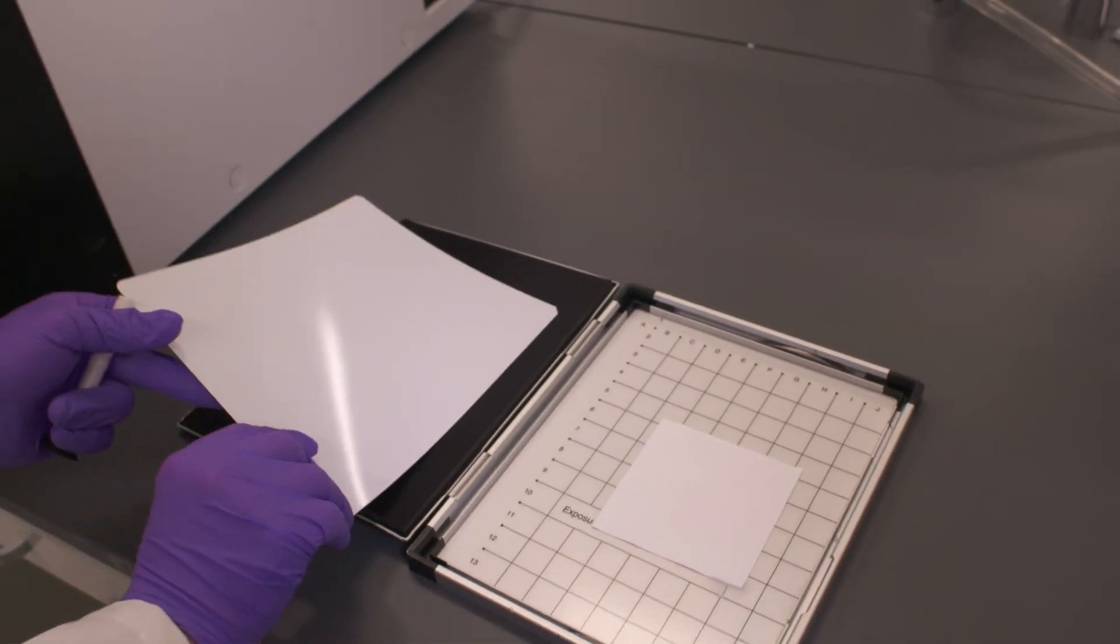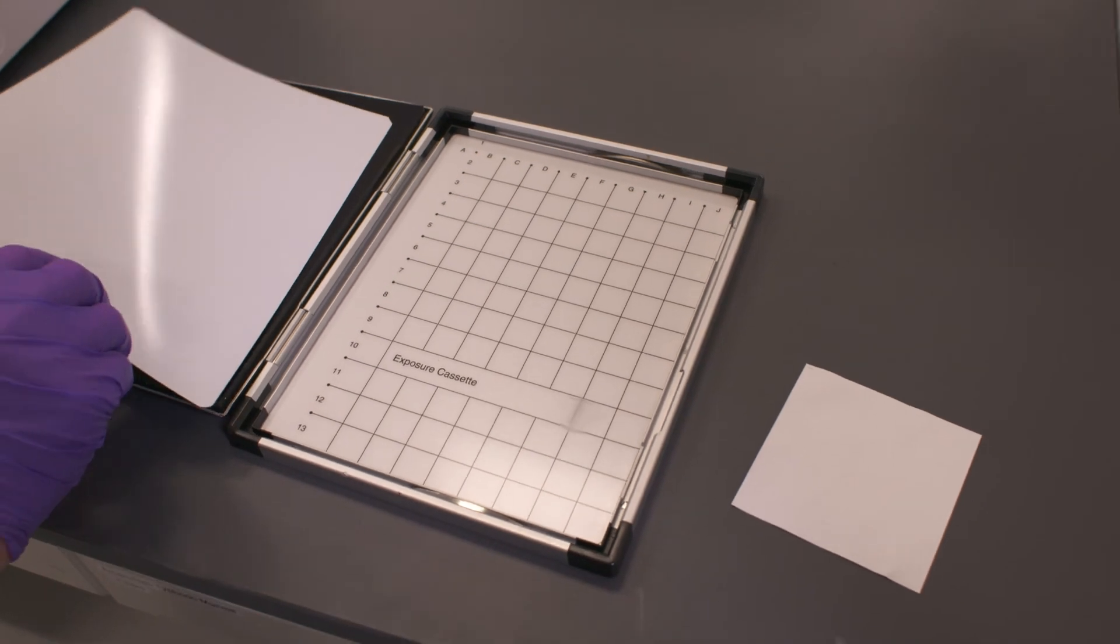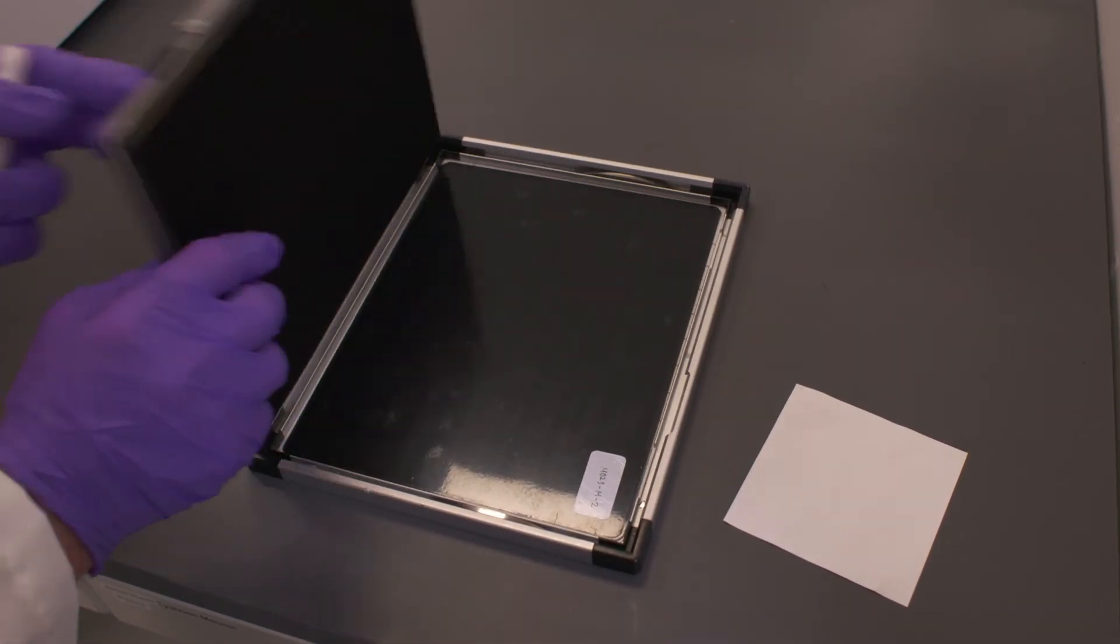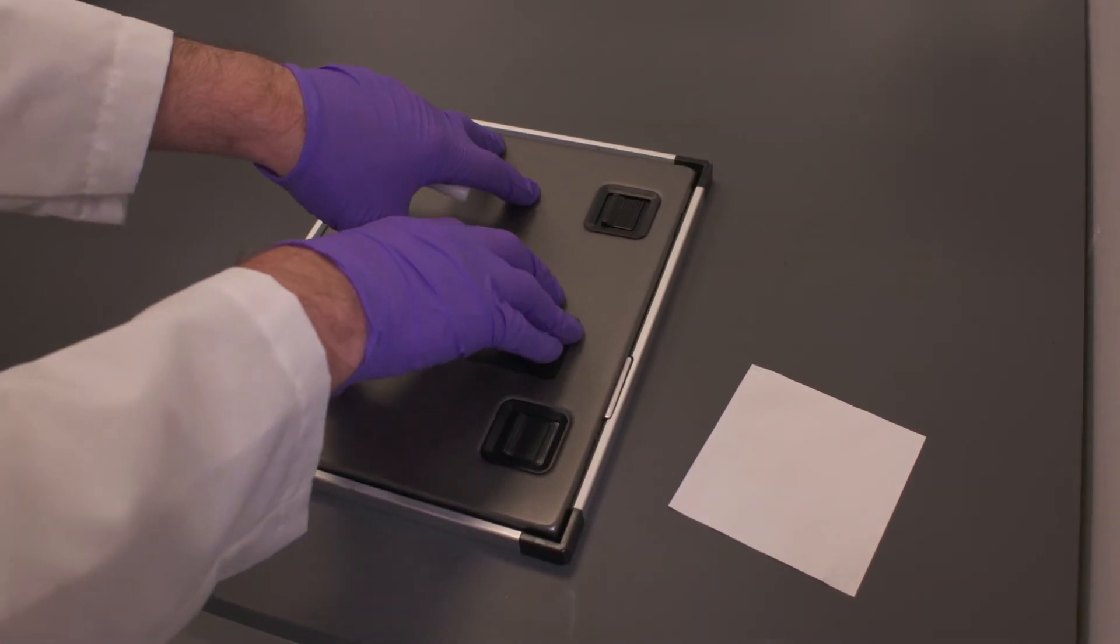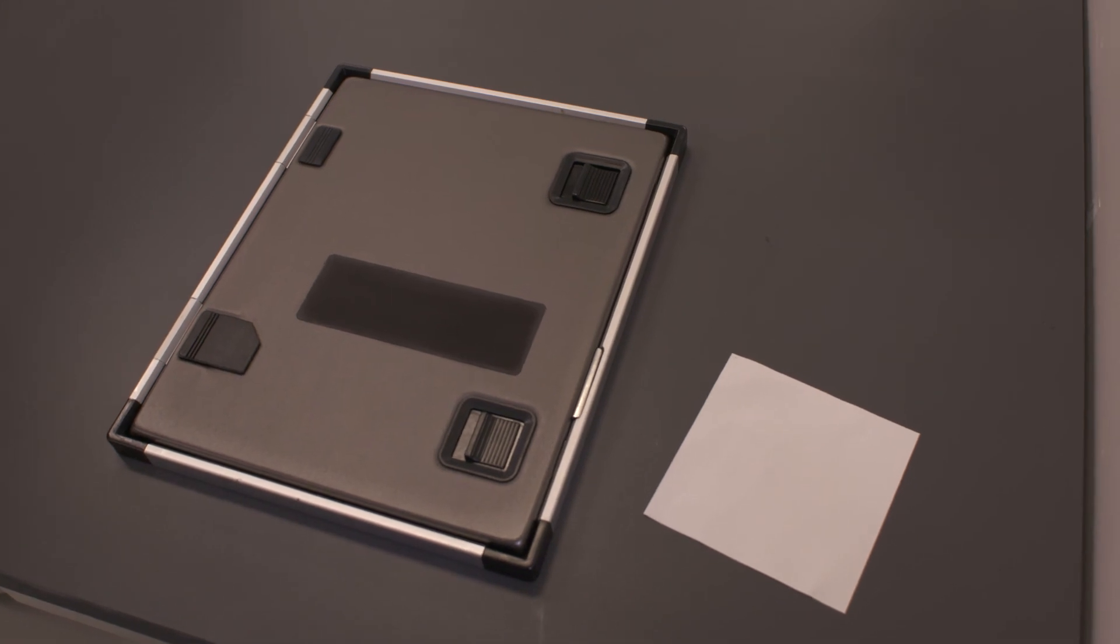We can take the screen over here. Now the important thing is we take our radioactive sample out. We'll leave that in the hot lab. We could then leave the screen in the exposure cassette and close that up again. Now we can take this up to the machine for scanning without any danger of having any radioactivity in contact with the instrument.